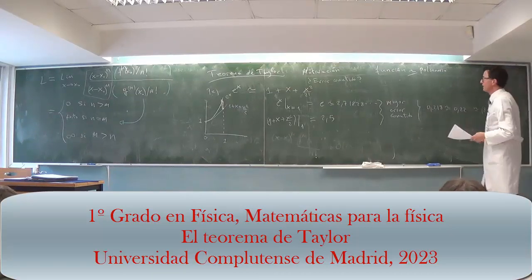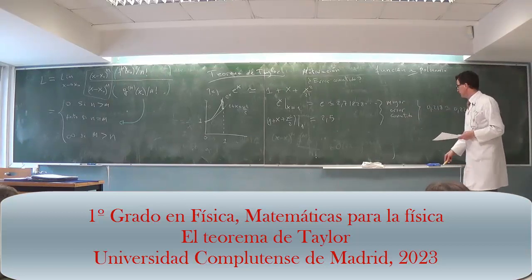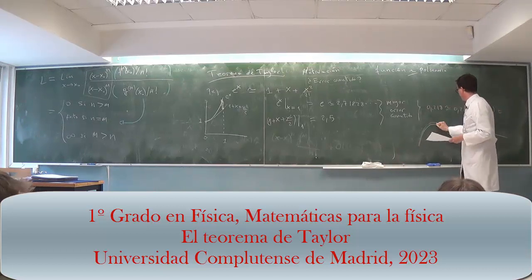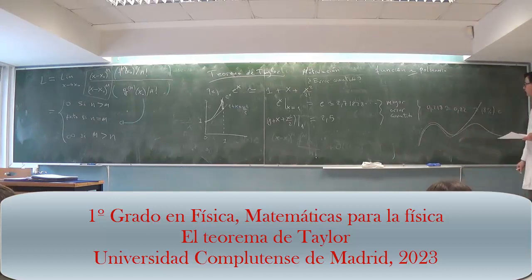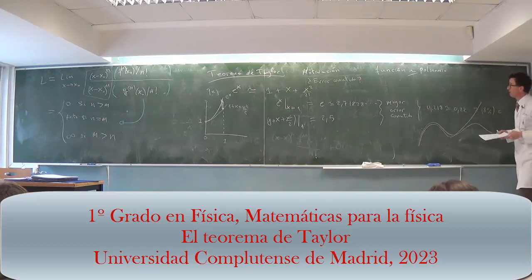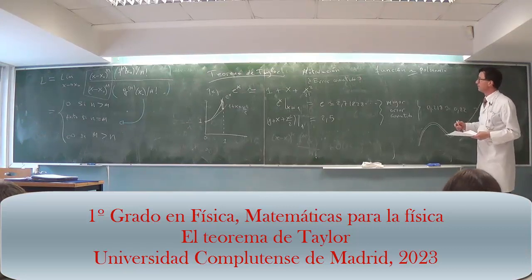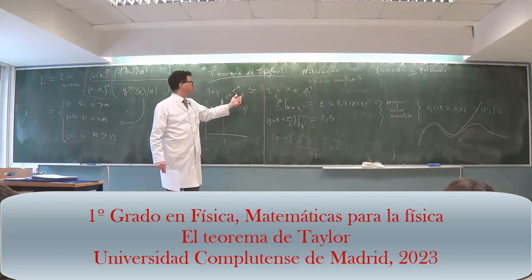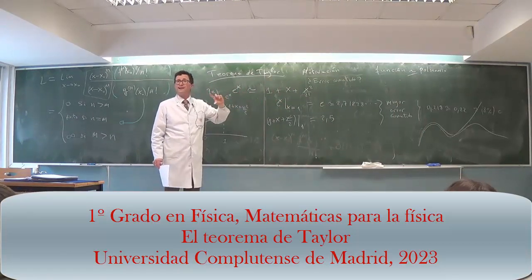But what happens if the function is more complicated? I can see this by eye. But if the function does this and the Taylor polynomial does this up to the order I stopped at, how do I estimate the error? Maybe I don't know how to calculate the function directly — that's why I'm using the polynomial. Taylor's theorem tells us whether the Taylor polynomial is a good approximation to the function, because it quantifies the error.